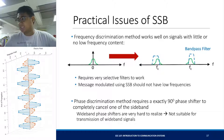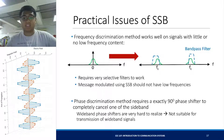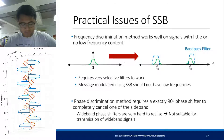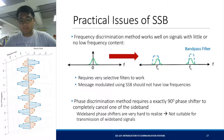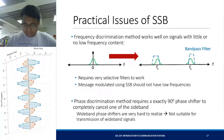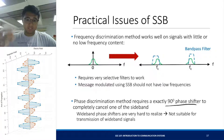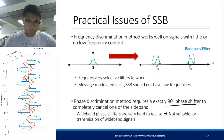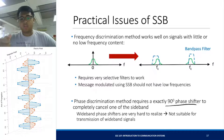A practical issue is that we cannot find a bandpass filter with an ideal response — it's not practical to implement. It requires very selective filters. And for the phase discrimination method, which is easier compared to the frequency discrimination method, we need an exact 90-degree phase shifter. We need a strict 90-degree out-of-phase between the cosine carrier and the sine carrier, and it's not going to be practical for wideband signals. It's difficult to design a wideband phase shifter for wideband signals.